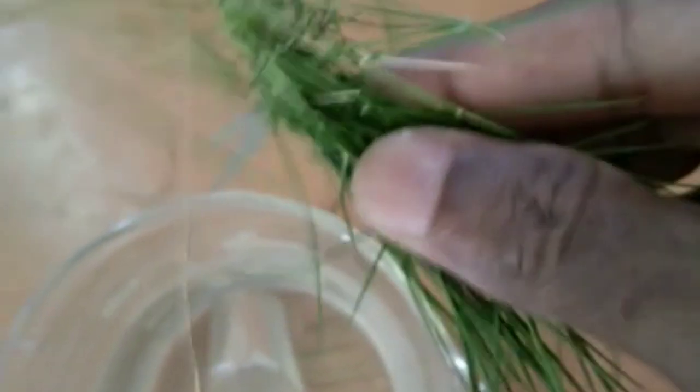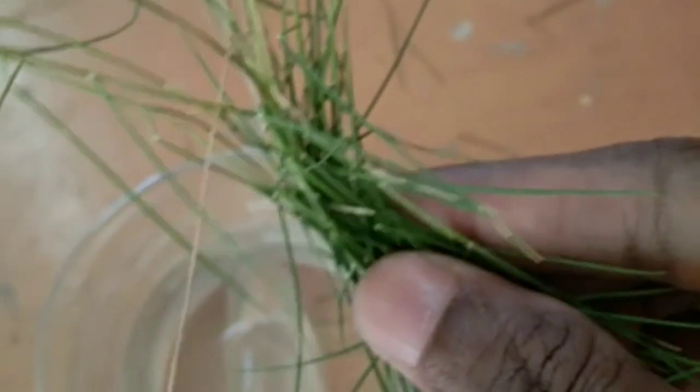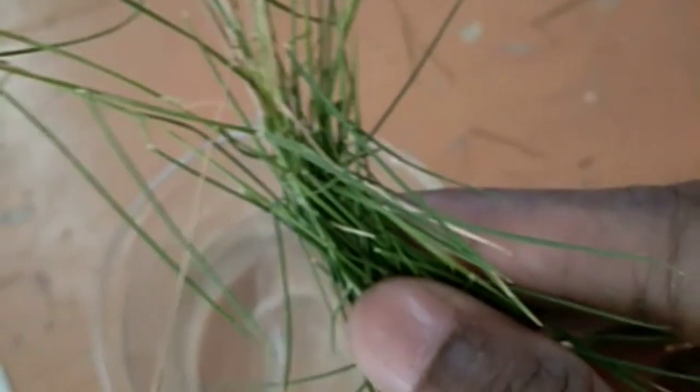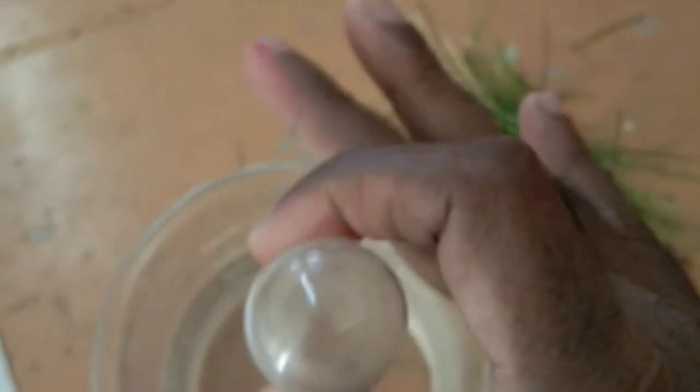Now I do the process by taking the materials. I take grass but we need a Hydrilla plant. I don't have Hydrilla plant but I take only grass. Then I take a beaker, a test tube, and one funnel also.